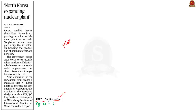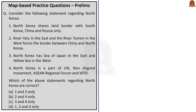This is the question. Four statements regarding North Korea are given. We have to find which of the following four statements are correct. Now, let's take the first statement: North Korea shares land border with South Korea, China, and Russia only. Note the word 'only' — when it appears in a statement, it makes the statement an extreme statement. In most cases, extreme words like most, all, only make the statement false.